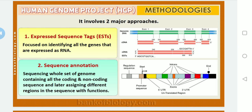The second approach is sequence annotation. This involves sequencing the whole set of genome containing all the coding and non-coding sequences, and later assigning different regions in the sequence with functions. This is called sequence annotation. A diagrammatic representation is given on the right side of the slide.